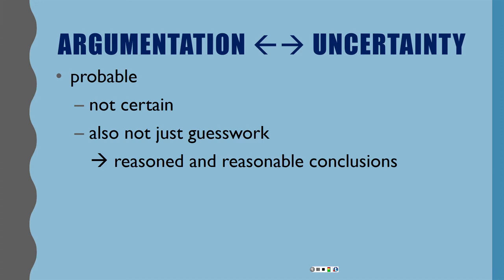Argumentation is usually geared toward trying to make reasoned and reasonable conclusions. A reasoned conclusion is one that has some logic to it — we can say why we know X is probably the right answer and not Y. A reasonable conclusion deals with the stasis of value — whether something is good or bad, fair or unfair, just or unjust, ethical or unethical. When we're dealing with reasonable conclusions, we're trying to say this resonates with my life experience, this seems like the right thing to do.